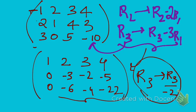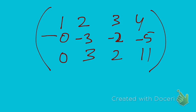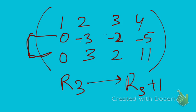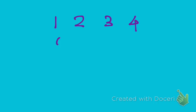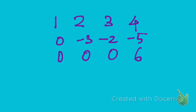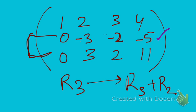Next I'm going to add R2 and R3. There is a minus 3 and a plus 3, and there is a minus 2 and a plus 2 — so if I add them I get zeros. I perform R3 replaced with R3 plus R2. This gives: 1, 2, 3, 4 / 0, minus 3, minus 2, minus 5 / 0, 0, 0, 6. Because minus 3 plus 3 is 0, minus 2 plus 2 is 0, and 11 minus 5 is 6.